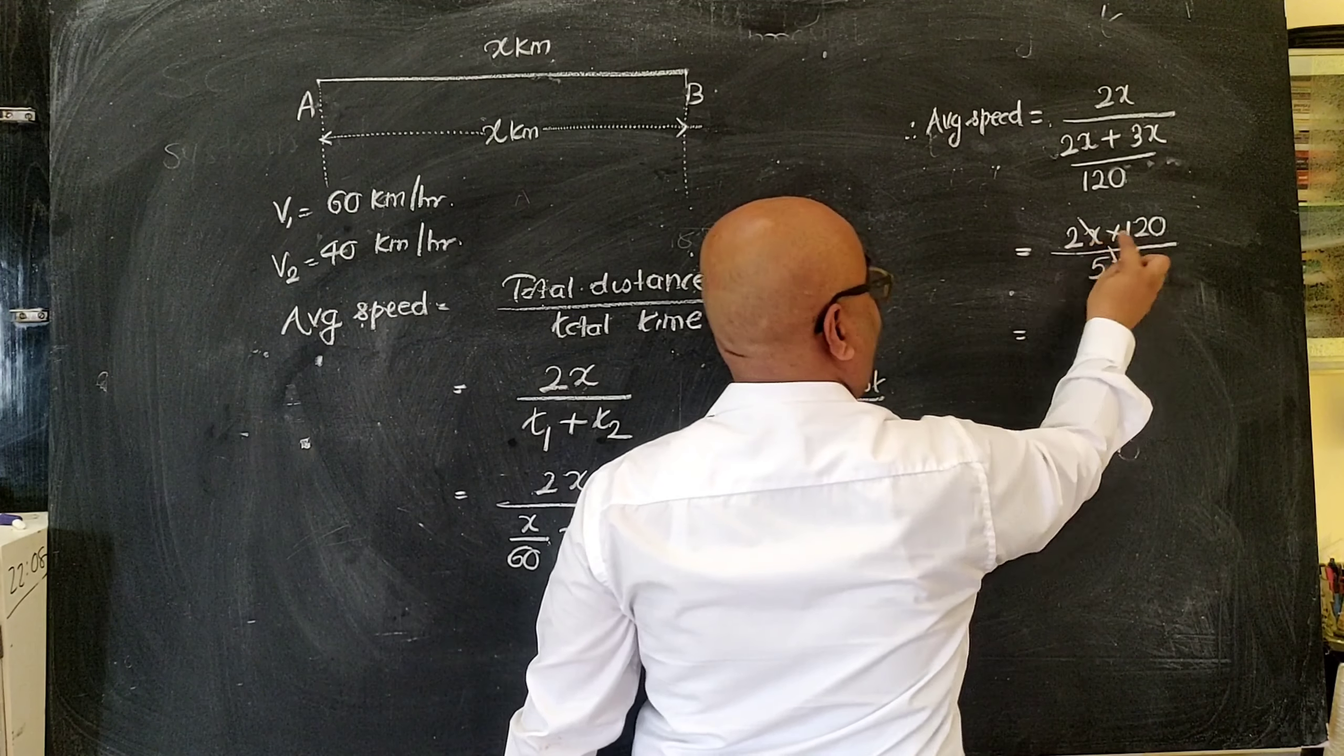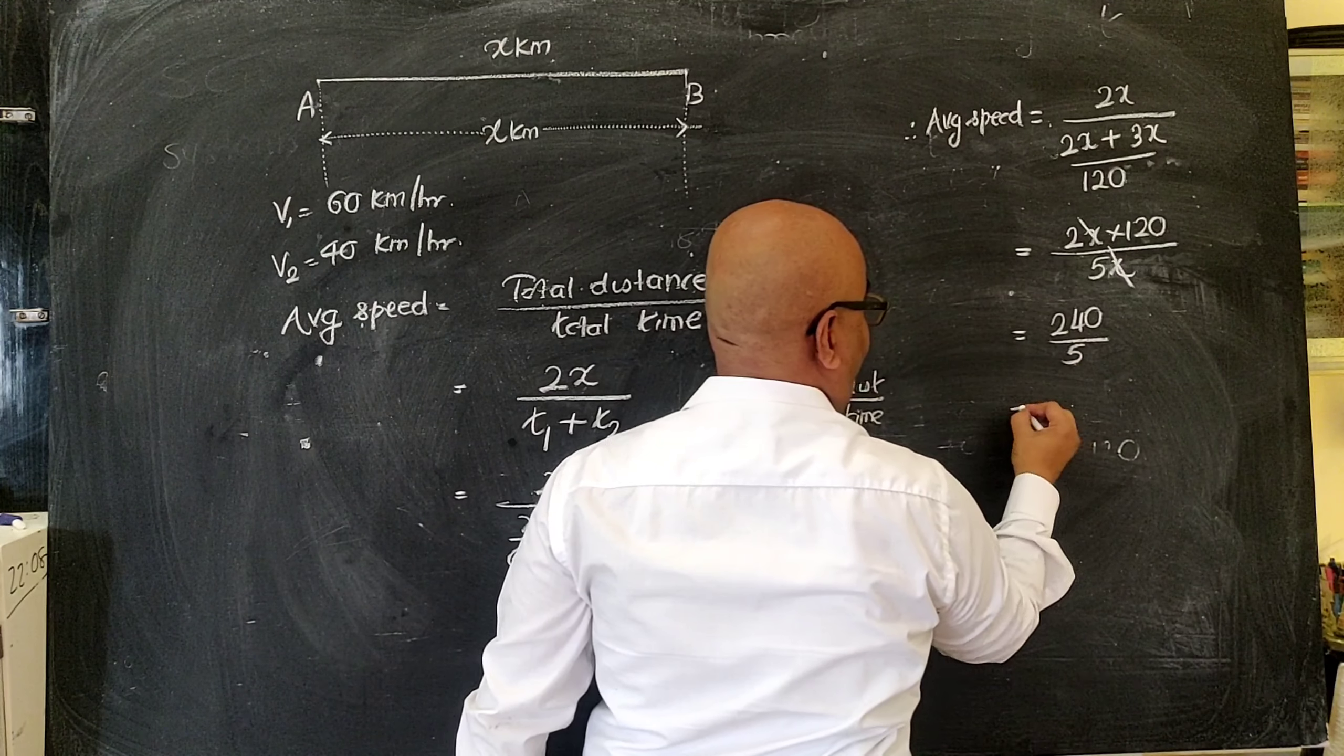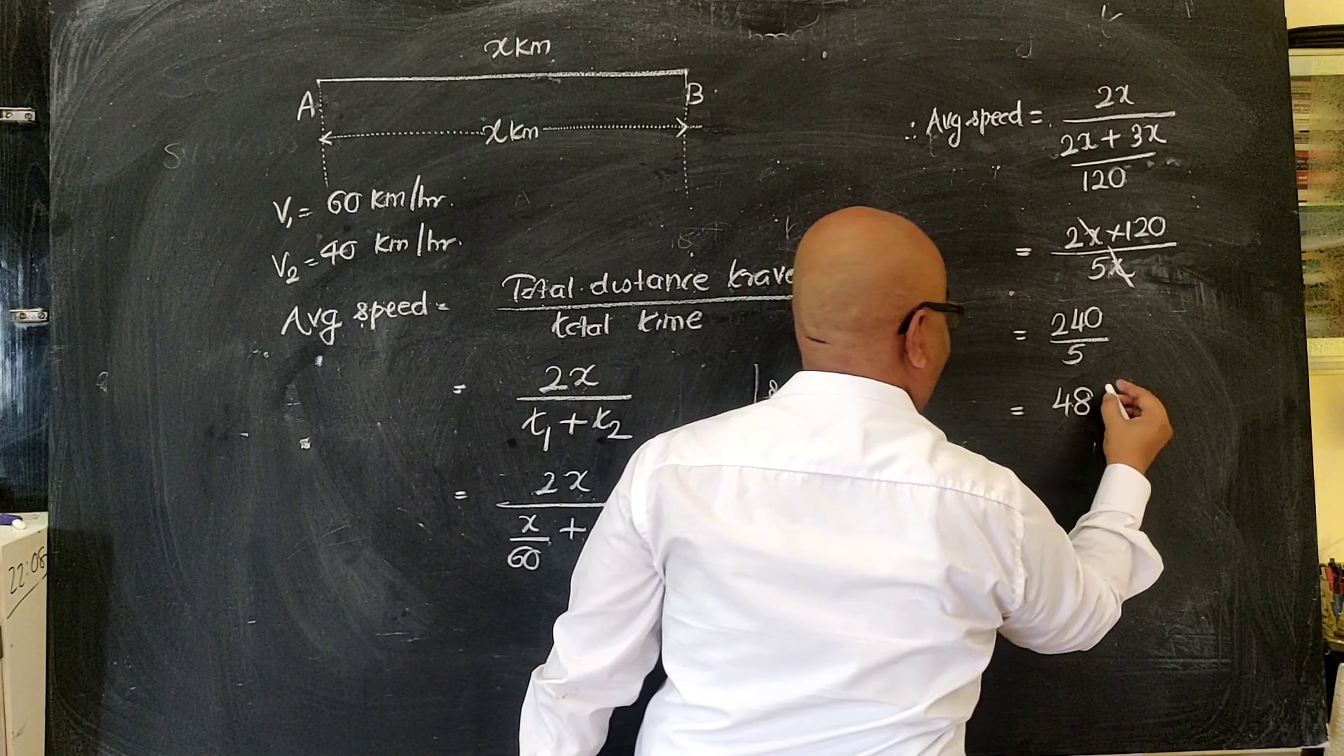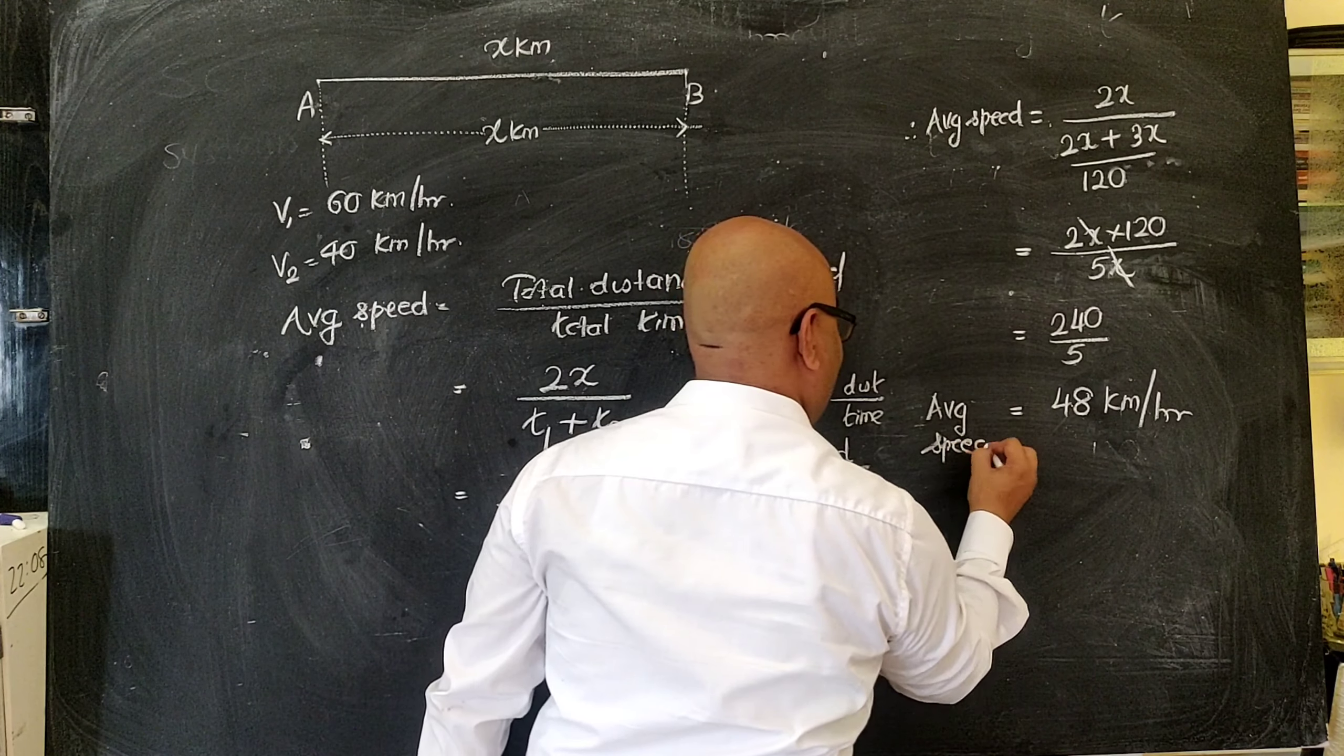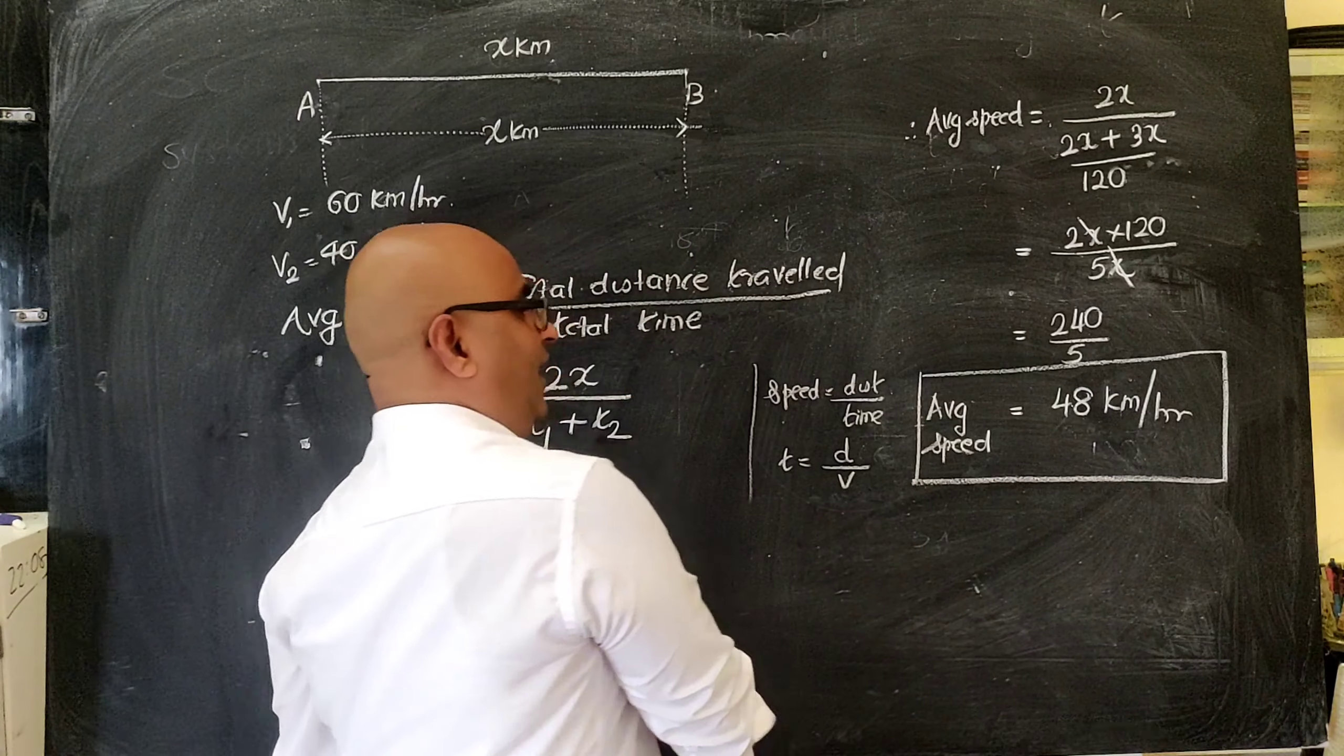x goes off. 2 into 120, 240, 240 upon 5. What is 240 upon 5? 48. So what is your average speed of the car? Average speed of the car is equal to 48 km per hour.